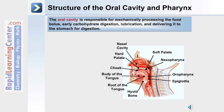At the top is the nasal cavity. Under that is the hard palate, which is connected to the soft palate, the cheek, then the tongue — the body of the tongue and more posteriorly the root of the tongue. Underneath the tongue is the hyoid bone. Behind the tongue is the epiglottis and oropharynx, and superior to the oropharynx is the nasopharynx.